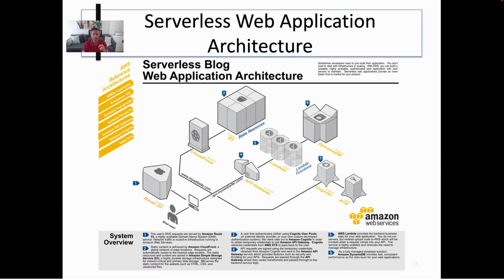Looking at this web application architecture, we see S3 and CloudFront providing a content delivery network to host the front-end of the application. Route 53 is the domain name service. The back-end of the application is API Gateway, Lambda, and DynamoDB integrated with Cognito for authentication and authorization.